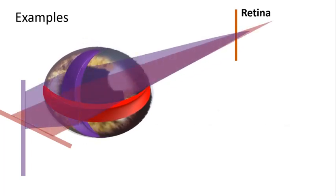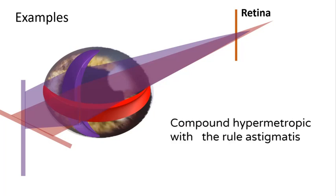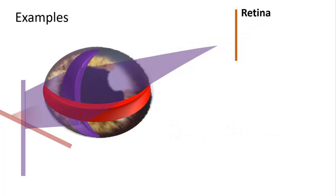Here: no meridian focuses on the retina, so it is either compound or mixed. Step two, both focus on the same side, so it is compound; both behind the retina, so hypermetropic. Step three, the vertical meridian is more myopic, so it is with the rule. This is a compound hypermetropic with-the-rule astigmatism.